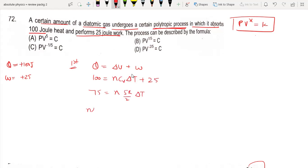Now for polytropic process, heat is equal to n*C*delta T. We can substitute the value of n*delta T here, which is 30/R, and work is 25. From this we can find C, which equals 10R/3.